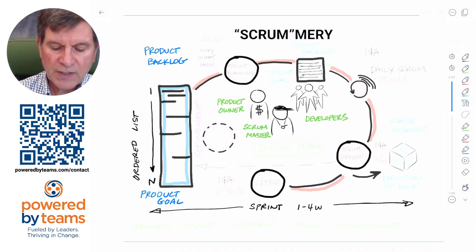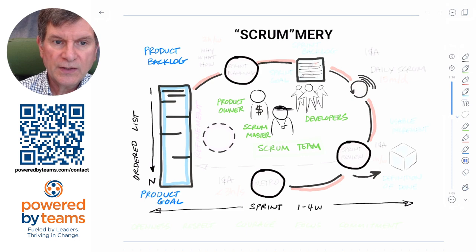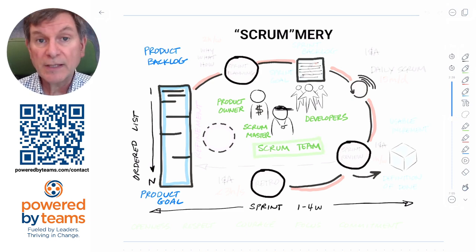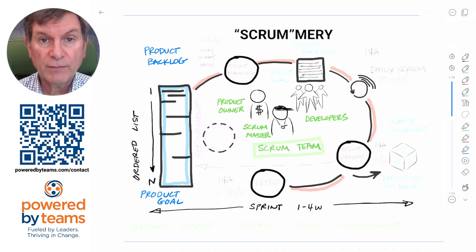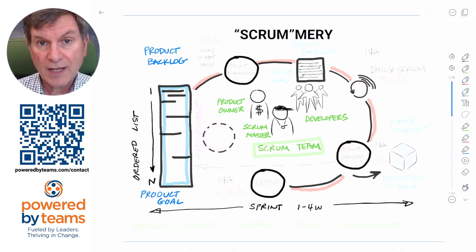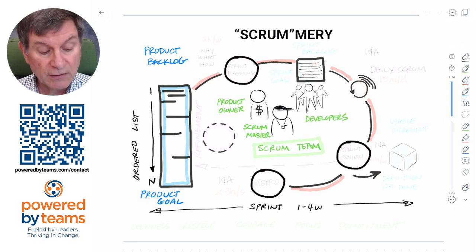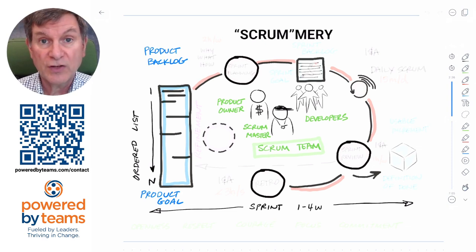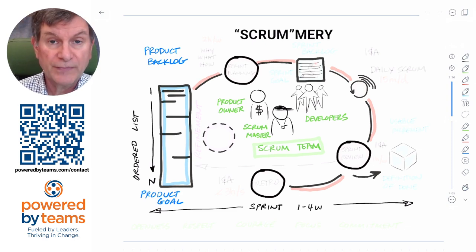All three of those accountabilities are held within a Scrum team, which is a group of 10 people or less when you include the product owner and the Scrum master — just big enough to accomplish something significant, but small enough that there are no handoffs even in communication, particularly since that's a cross-functional team.